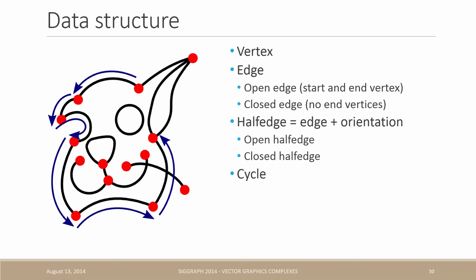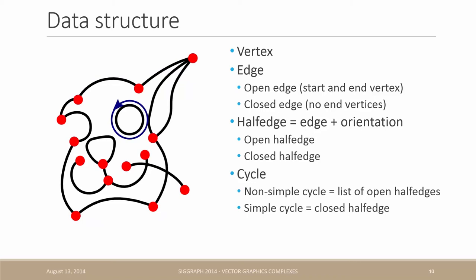Another object is the cycle which is a list of consecutive half edges starting and ending at the same points. More specifically, this cycle is called a non-simple cycle because it is a list of open half edges. Another type of cycle is the simple cycle which is a cycle composed of a unique closed half edge. In addition, we introduce the notion of Steiner's cycle which is a cycle reduced to a unique vertex.